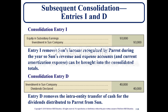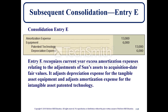Consolidation entry D: investment in Sun Company is debited $40,000 and dividends declared is credited $40,000. Entry D removes the intra-entity transfer of cash from the dividends distributed to parent from Sun Company — increasing the investment account because it was originally decreased when the dividends were issued. Consolidation entry E: amortization expense and equipment are debited; patent technology and depreciation expense are credited. Entry E recognizes the current year excess amortization expenses relating to the adjustments of Sun's assets to acquisition date fair values, adjusting depreciation for equipment and amortization for patent technology. E follows entry I by removing excess allocations of depreciation and amortization.